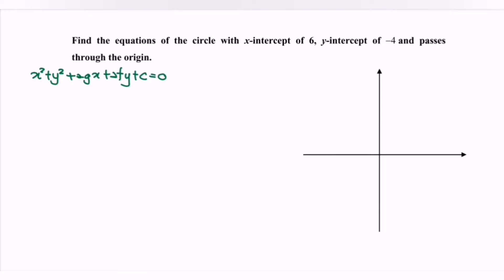With the x-intercept — so where is the x-intercept? The x-intercept means the point located on the x-axis. So x-intercept of 6, meaning that we have the point (6, 0).